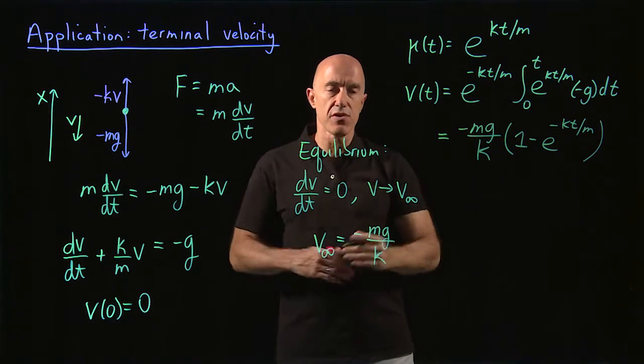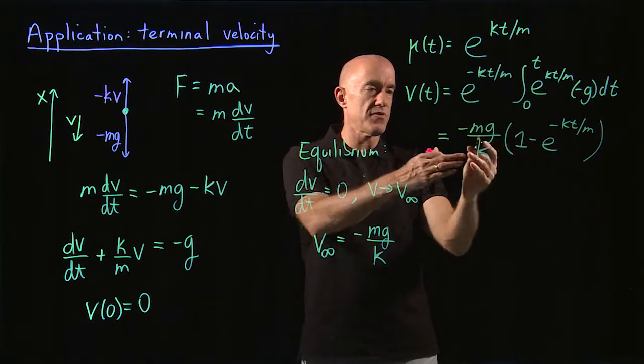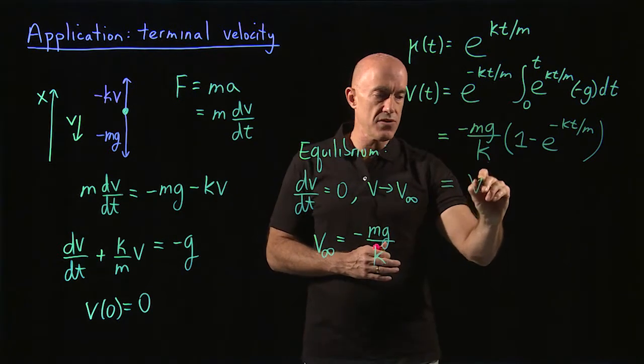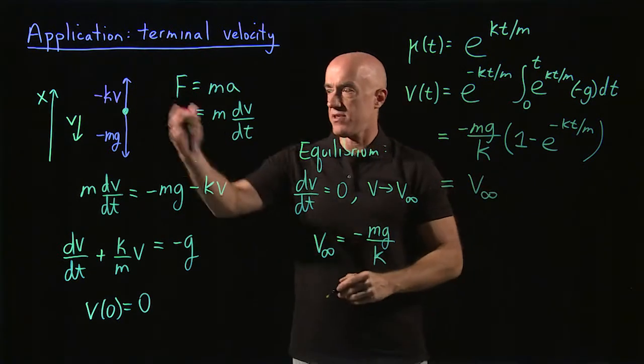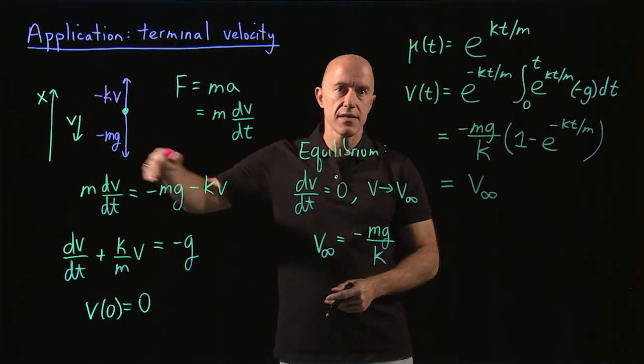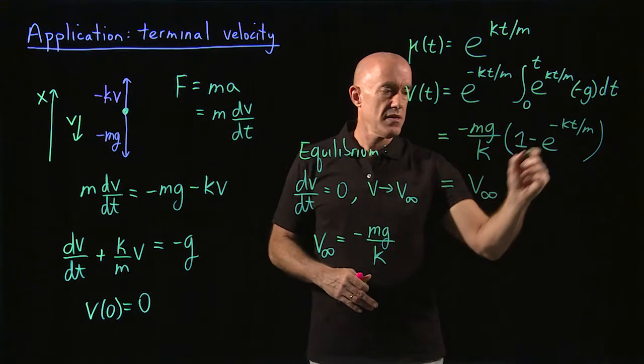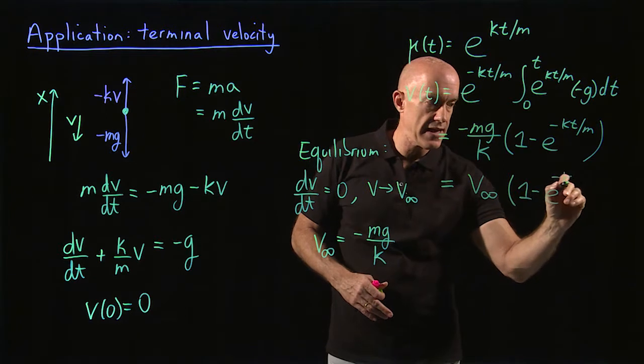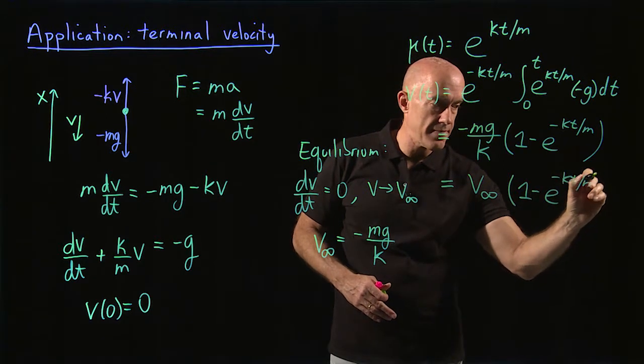And we might as well use the terminal velocity here. So the terminal velocity is minus mg over k. So that will be the terminal velocity, which for the case of a skydiver will be negative, meaning that the skydiver is falling. Times 1 minus e to the minus kt over m.